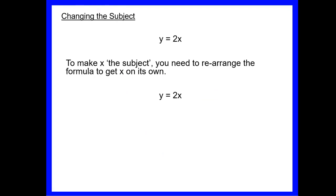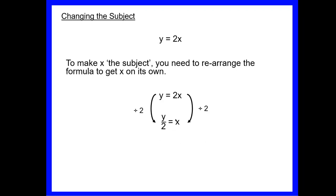So now we've looked at all the terminology, let's have a go and see if we can make x the subject. To make x the subject we want to get x by itself, so we want to keep x and get rid of this 2. Now 2x means 2 multiplied by x. Using our inverse operations, to get rid of a times 2 we need to divide both sides by 2. If I divide this side by 2 we get y divided by 2; if I divide 2x by 2, 2 divided by 2 is 1, giving 1x which is just x.